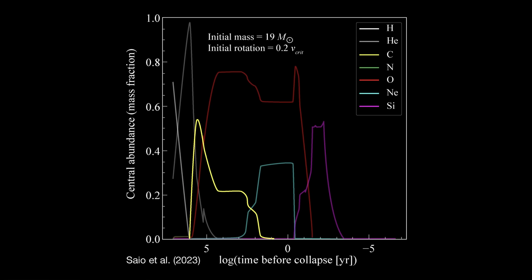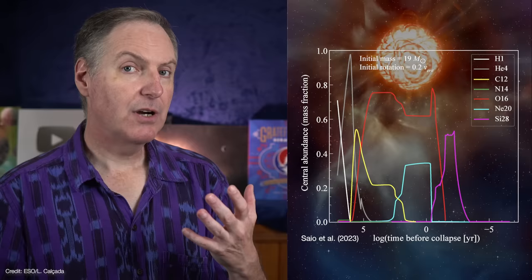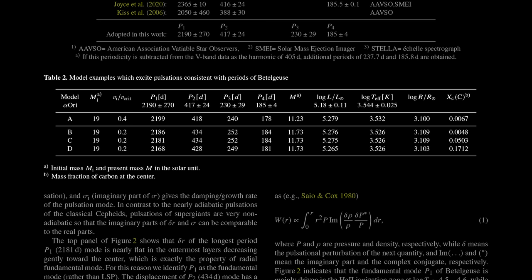Iron implodes so quickly that it's not even plotted on this graph. Anyway, notice how the abundance of carbon builds up and then drops off in a series of steps until it gets down to about the 1 year mark. If Sayo's models are correct, and Betelgeuse is really in its carbon-burning phase, then the amount of carbon presently in the core should give us an idea as to how much time the star has left.